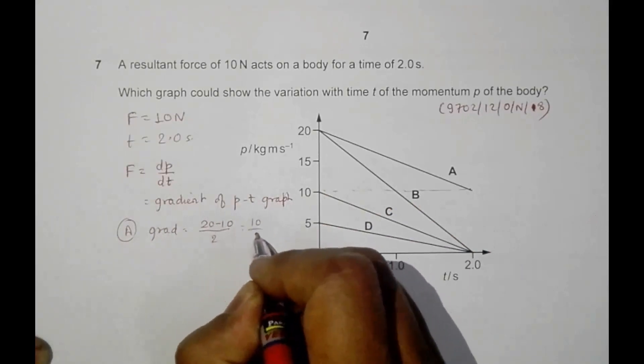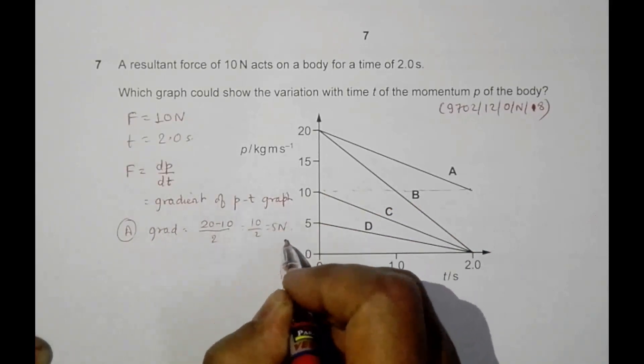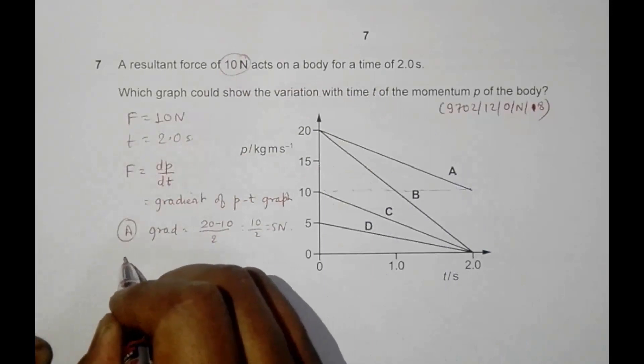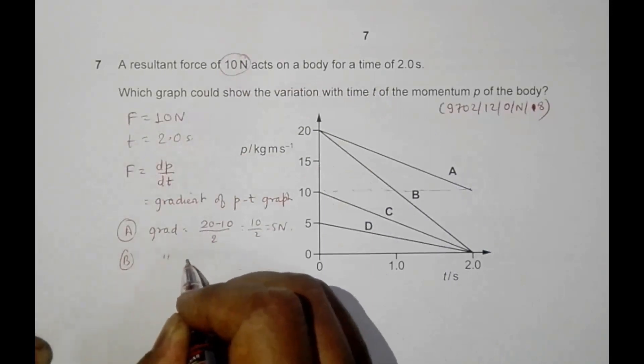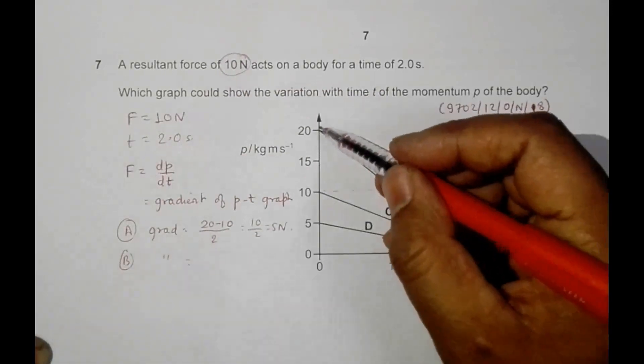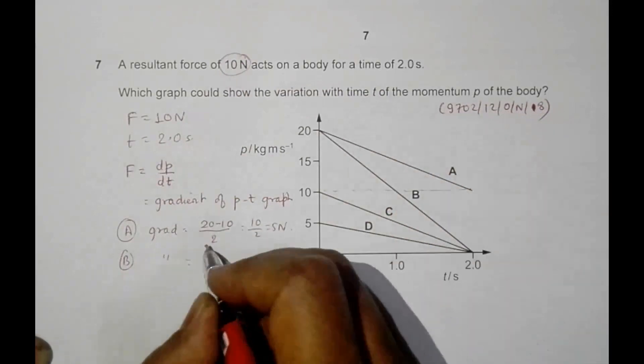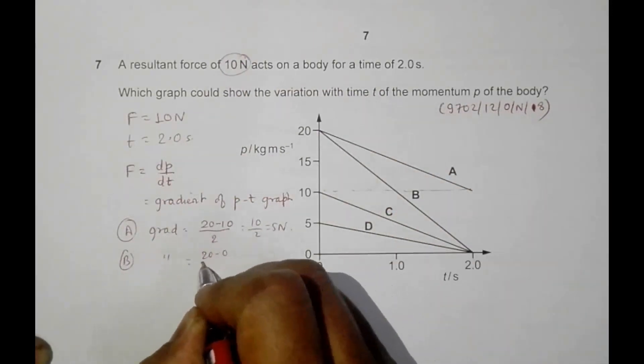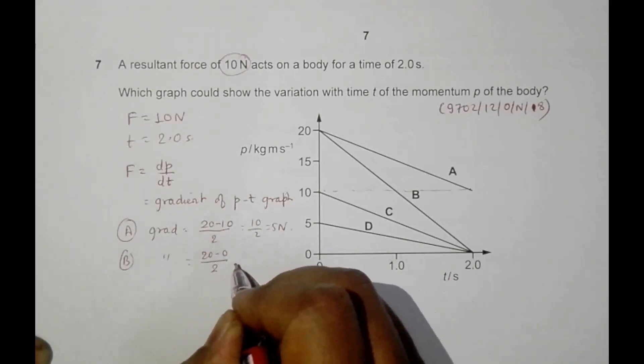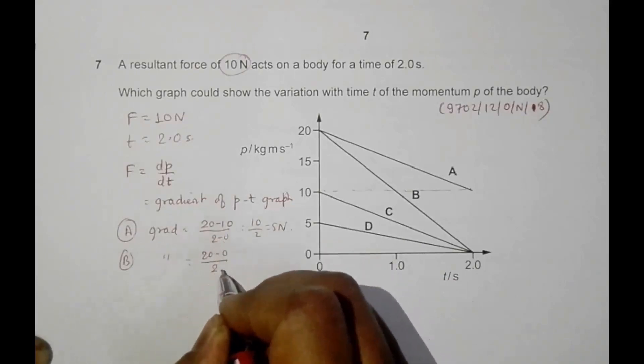We have, it goes from 20 to 0, so it is 20 minus 0, and the time is 2 seconds, so 2 minus 0. Actually I should do it as the gradient...